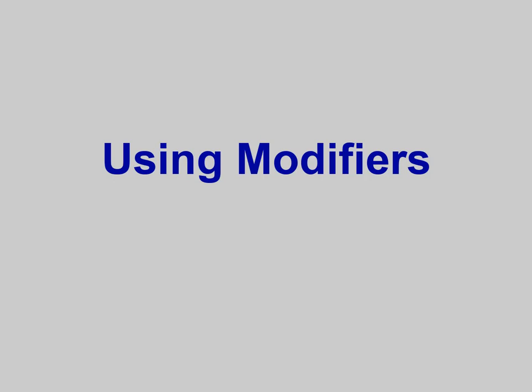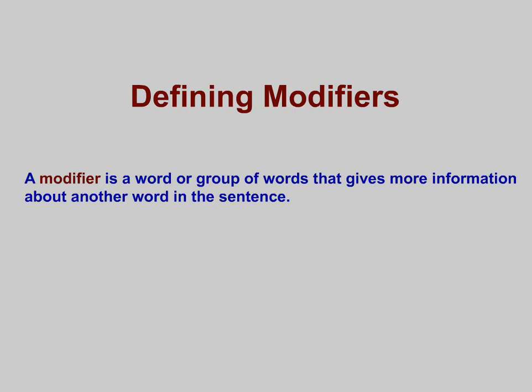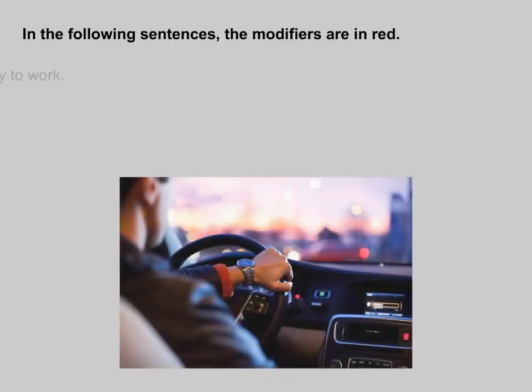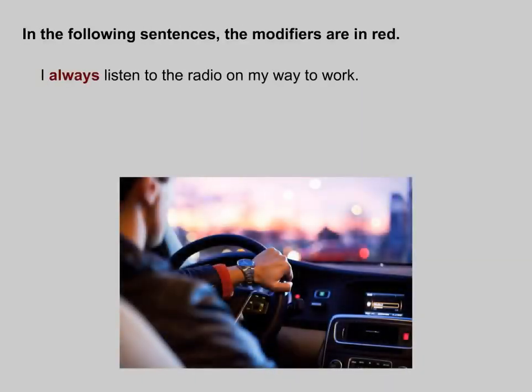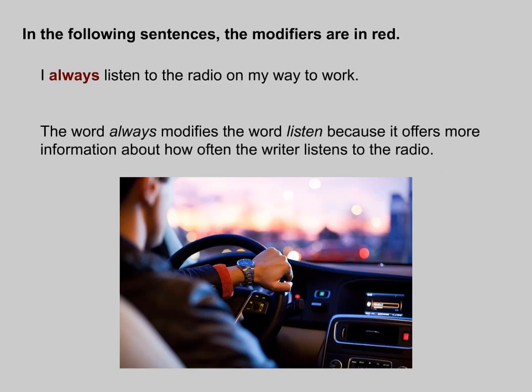Using modifiers: a modifier is a word or group of words that gives more information about another word. In the following sentences, the modifiers are in red. For example, 'I always listen to the radio on my way to work.' The word 'always' modifies the word 'listen' because it offers more information about how often the writer listens to the radio.